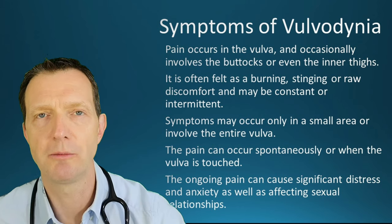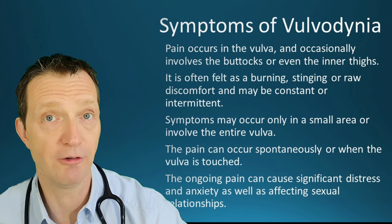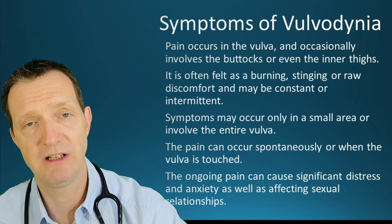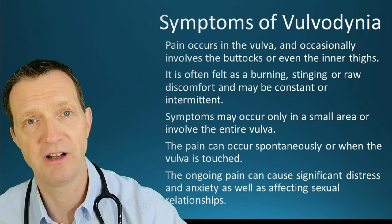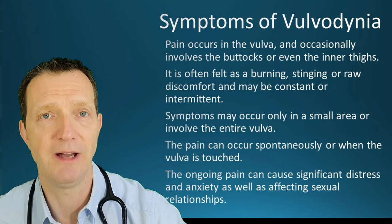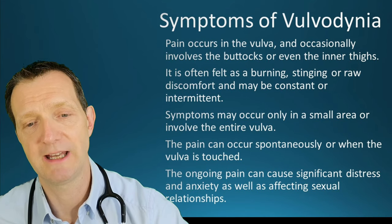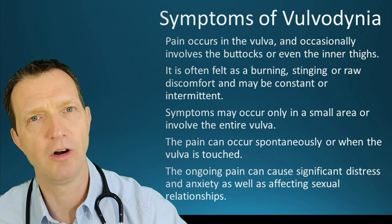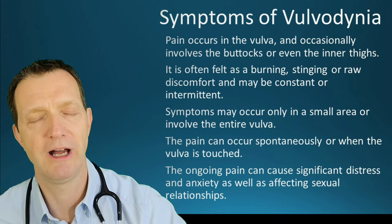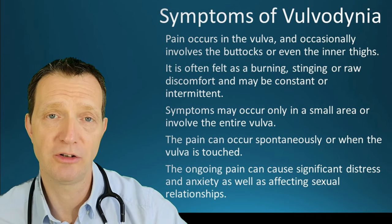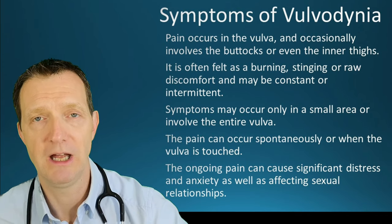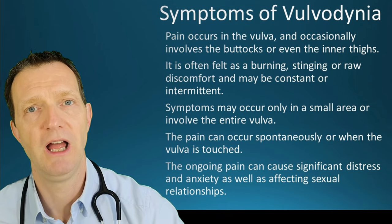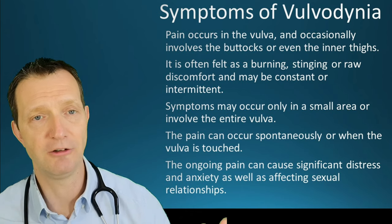What are the symptoms? The pain occurs in the vulva area; occasionally it can be a little more widespread, involving the top of the thighs, inner thighs, and buttocks. It can be felt as an ache, sometimes a burning or stinging sensation, often described to me as a soreness. It can be constant or intermittent, and symptoms can occur in just a small area or involve the entire vulva.